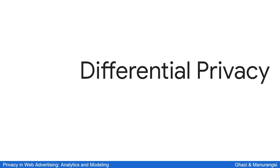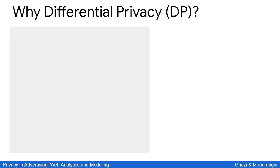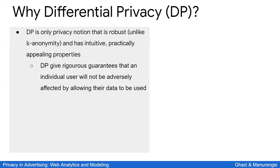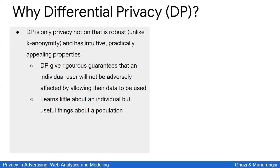Differential privacy is popular for several reasons: it is robust against differencing attacks, composition, and post-processing. It provides a mathematically rigorous guarantee on protecting individual users' data, while still allowing algorithms to learn patterns that emerge at large scale — patterns that don't violate individuals' data — thus providing high utility for many useful tasks.